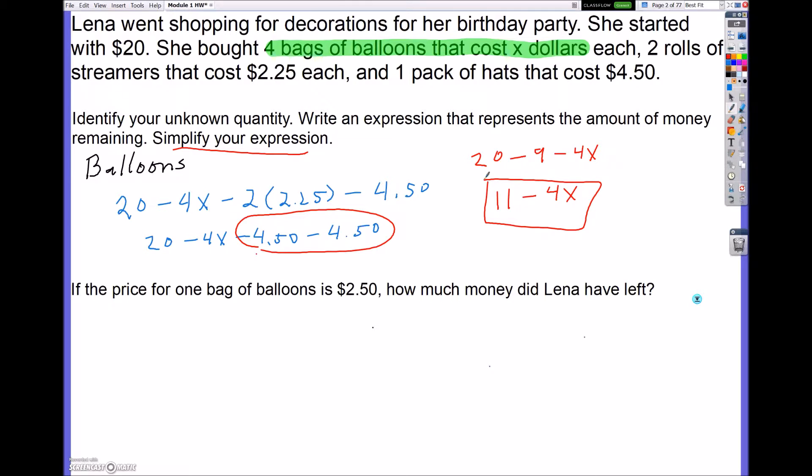Now let's say we get more information and it says if each bag of balloons is $2.50, how much will she have left? Well currently she has $11 left. She's buying four bags of balloons which is $2.50 each. And if you have four bags times $2.50, that is going to give you $10. So it's going to be 11 minus 10, which will equal $1. So Lena will have $1 left.